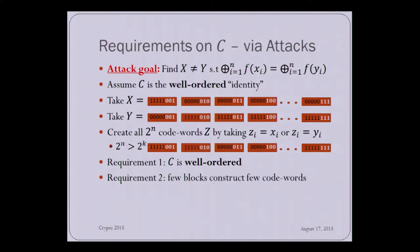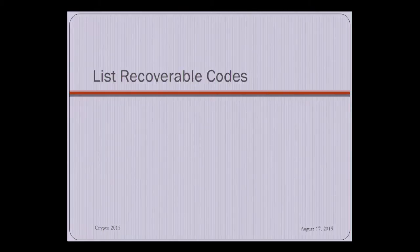And this brings us to the next requirement. You cannot construct too many words from a few blocks. And another requirement is going to be that the code needs to have a large hamming distance between any two code words. And this is a bit more subtle to see why it happens, not getting into it. So having these requirements in mind, one may think, where can we find such a code? Well, luckily, they exist. They are called list recoverable codes. And let me introduce you to them.